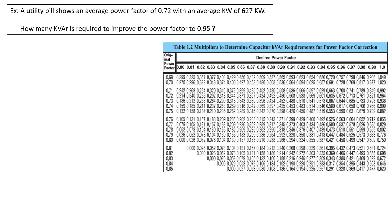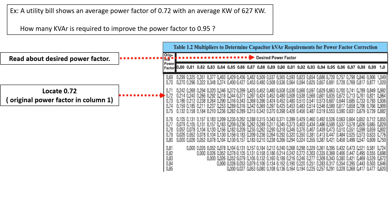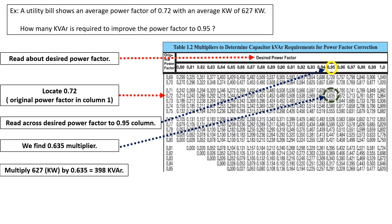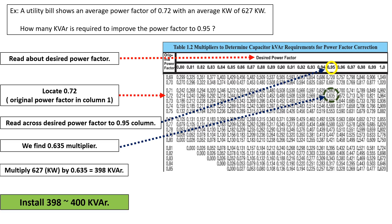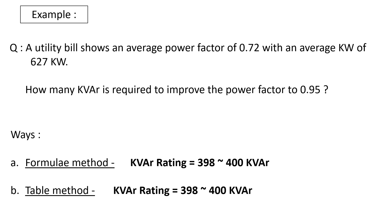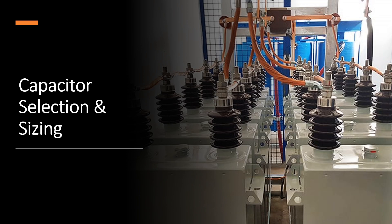Refer to the table — use the x-axis for present power factor and y-axis for required power factor. We get the multiplier as 0.635. Simply multiply this factor with the load in kilowatt to get the required kVAR. In this case we are getting 400 kVAR as the answer, confirming the result from the formula method.